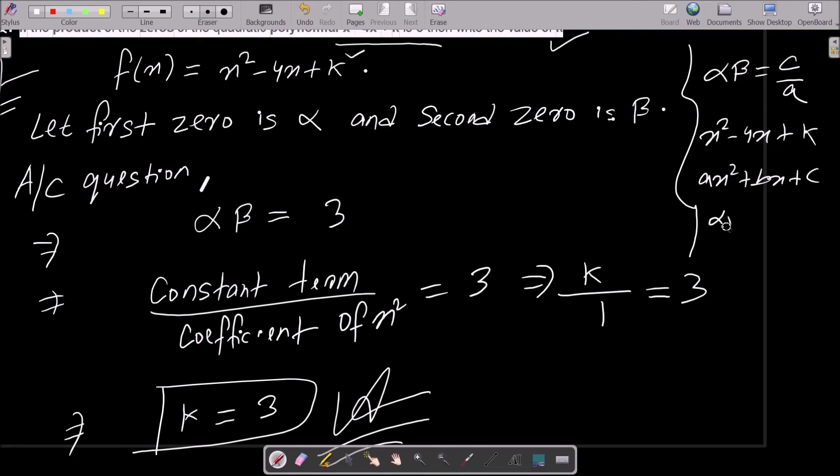Here, α + β = -b/a is the formula, and α × β = c/a. So c is k, a is 1, and α × β is given as 3. If you do the cross multiplication, then k = 3.